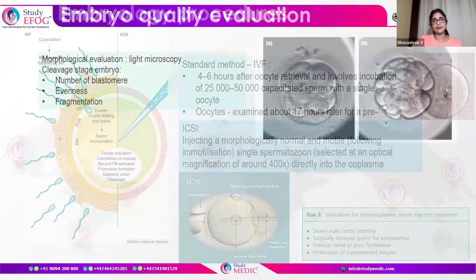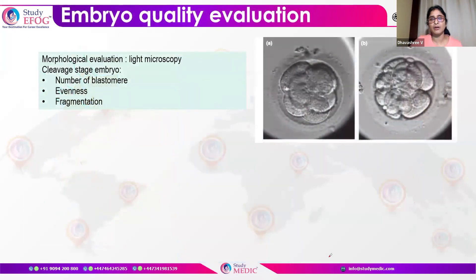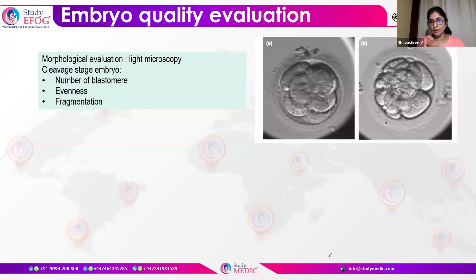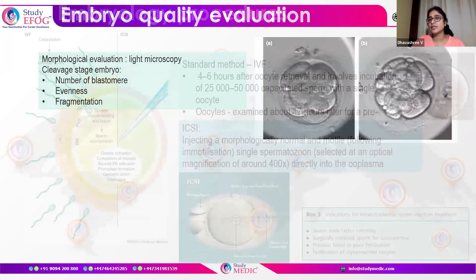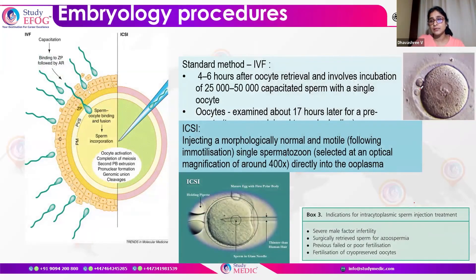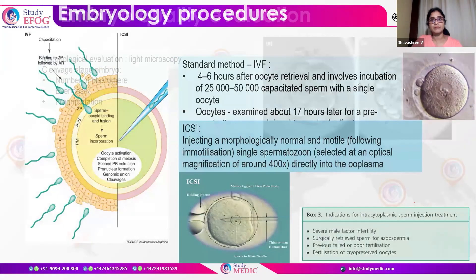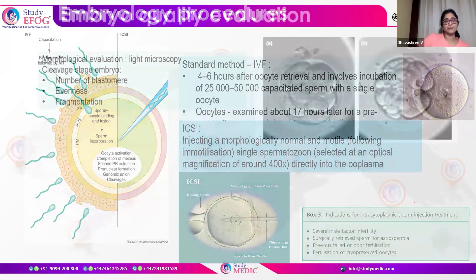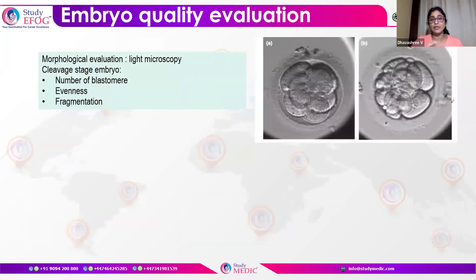After ICSI, fertilisation is confirmed the following day by looking for two pronuclei and two polar bodies. Two polar bodies and two pronuclei confirm that the oocyte has been fertilised by the sperm. Once fertilised, the embryos are allowed to grow, and we evaluate them for either a day-3 or day-5 transfer.